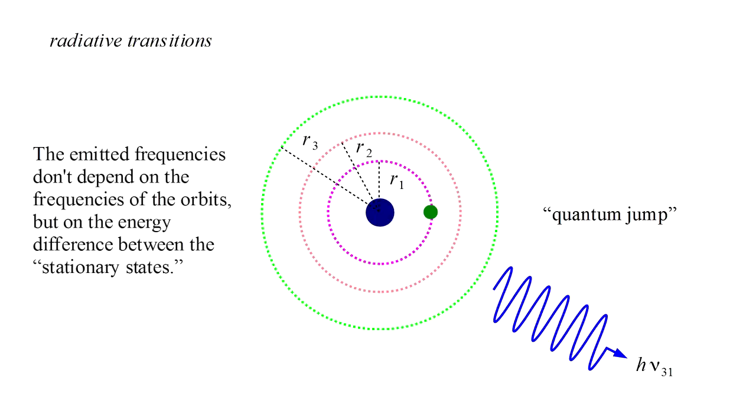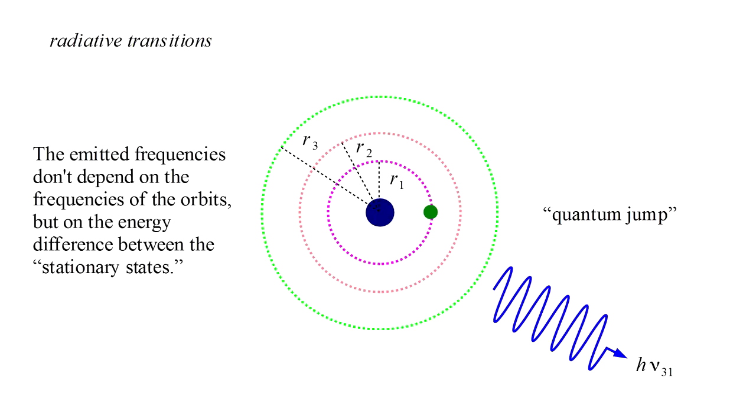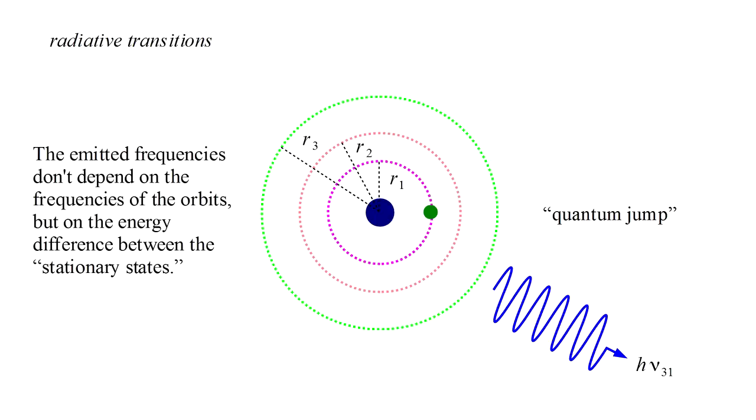Moreover, we've seen that the emitted frequencies don't equal the frequencies of the orbits themselves, as would be required by a classical theory. The Schrödinger description of hydrogen appeared to overcome both of these issues.